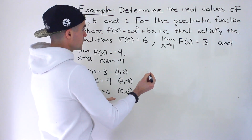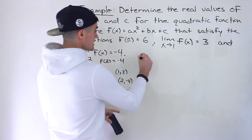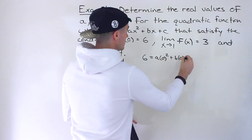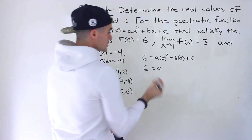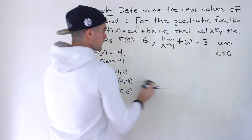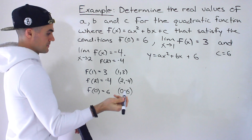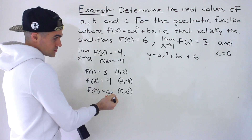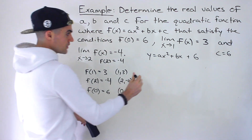Using these points, we can create equations. Starting with the point (0, 6), since x is 0, the ax squared and bx terms both become 0. So right away we know c equals 6. We can rewrite the quadratic as ax squared plus bx plus 6. The y-intercept of this quadratic is 6, so c equals 6.